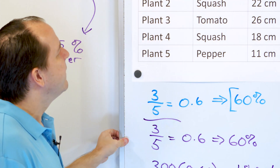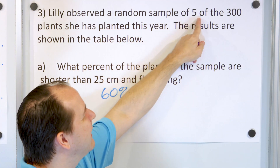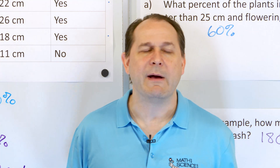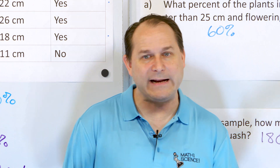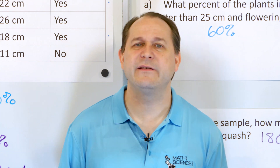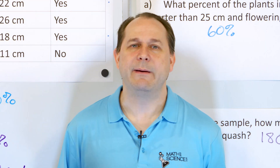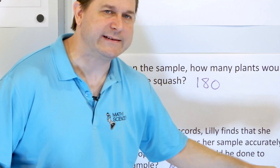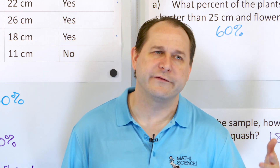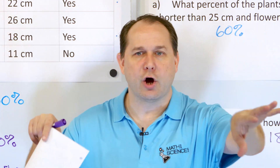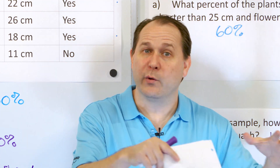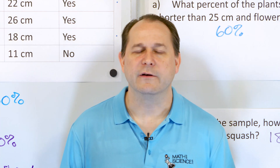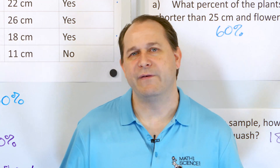What can be done to improve the sample? She did a random sample of only five plants. Asking five people and drawing a conclusion about 300 makes no sense — this sample size is too small. The biggest improvement would be to increase the sample size. Also make sure it's truly random: sample all different rows and positions in the garden, not just one local area.